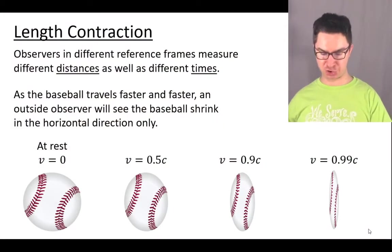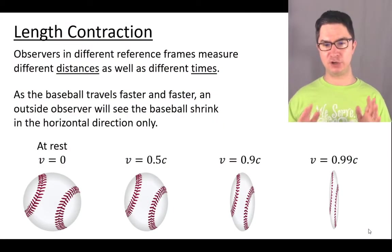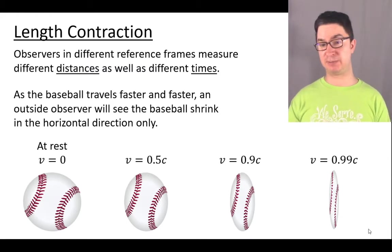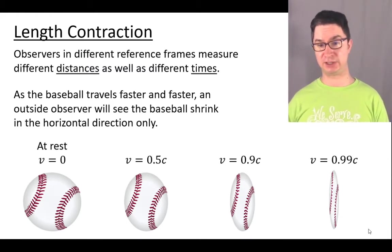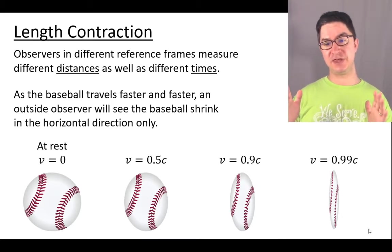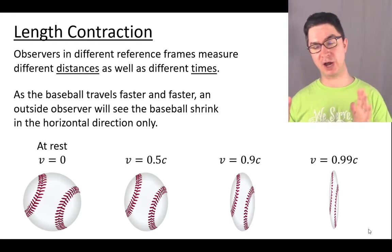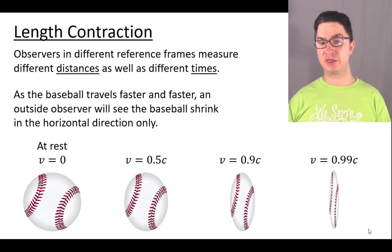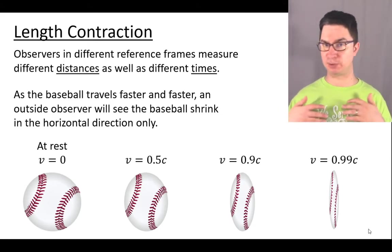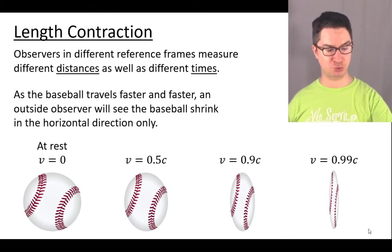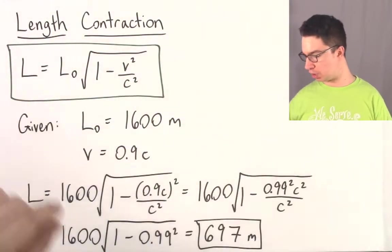A typical picture shown to students is a baseball at four different speeds: at rest, at 50% of the speed of light, at 90%, and at 99%. From the perspective of an outside observer, the baseball compresses or contracts along the direction of motion, getting thinner and thinner. This is consistent with experiment — not something we've made up — and it's very valuable in science.